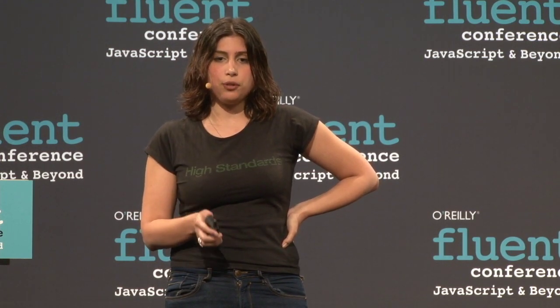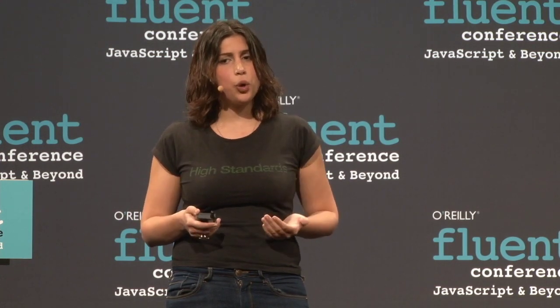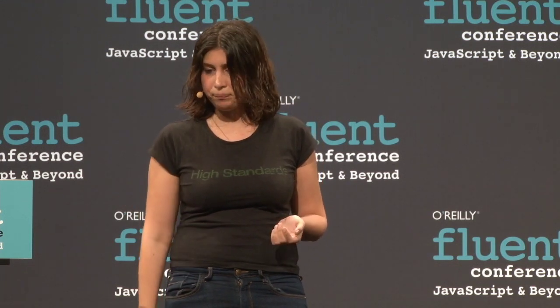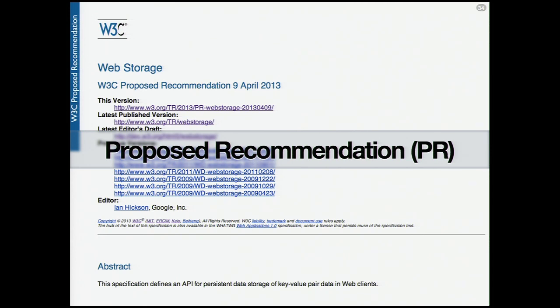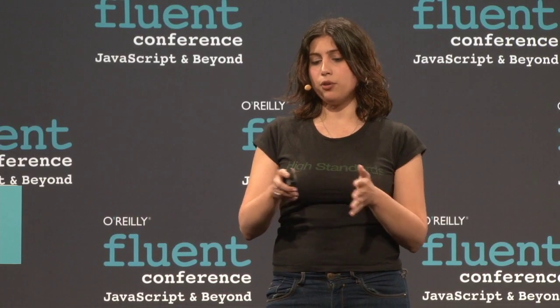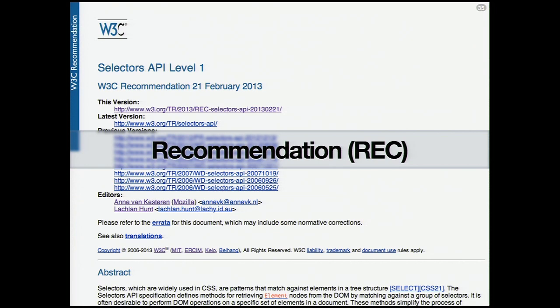We need at least two different implementations to know the specification is good enough and can actually be implemented — because specifications can have bugs too. Writing a specification is a lot like writing code in natural language. Once we have tests and implementations, we advance to proposed recommendation, which is like a semifinal stage. I've never heard of a spec reaching proposed recommendation that didn't reach recommendation. It's a final stage for the advisory committee — the heads of every member company — to register any objections. Eventually we move to recommendation, the last stage. A new version of a spec can start at any stage before that — selectors 4 started when selectors 3 was still at candidate recommendation or even working draft.